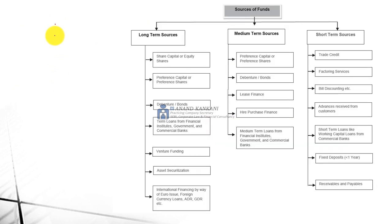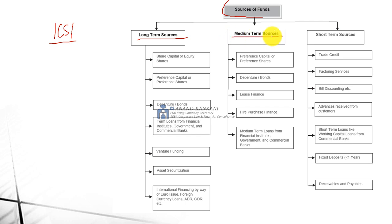Further, there is a screenshot of your institute module where they have mentioned about the sources of funds. There are three sources of funds: one is the long-term source, then you have the medium-term source, and then you have the short-term source. When we talk about long-term sources, we have share capital — equity share, preference share — debentures and bonds, then the term loans which you can take from the financial institutions, government, commercial banks, venture capital funds.